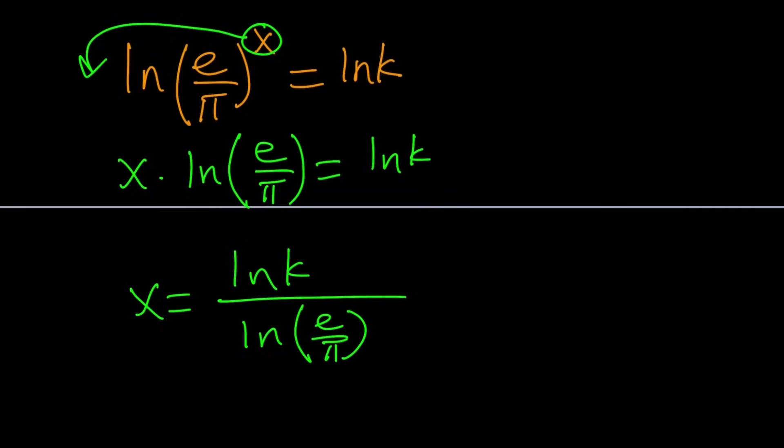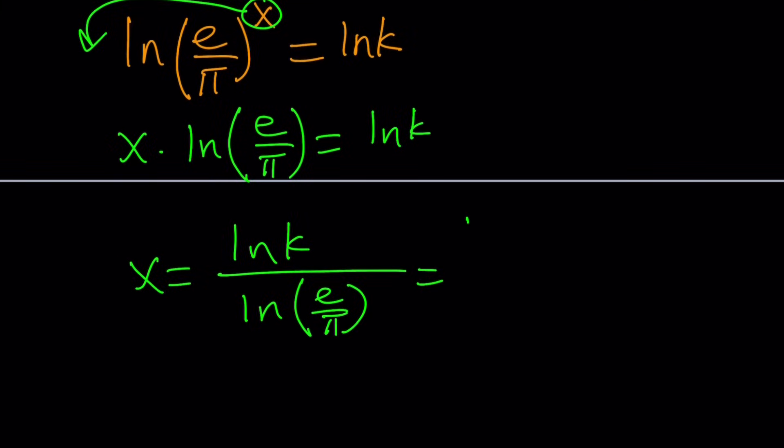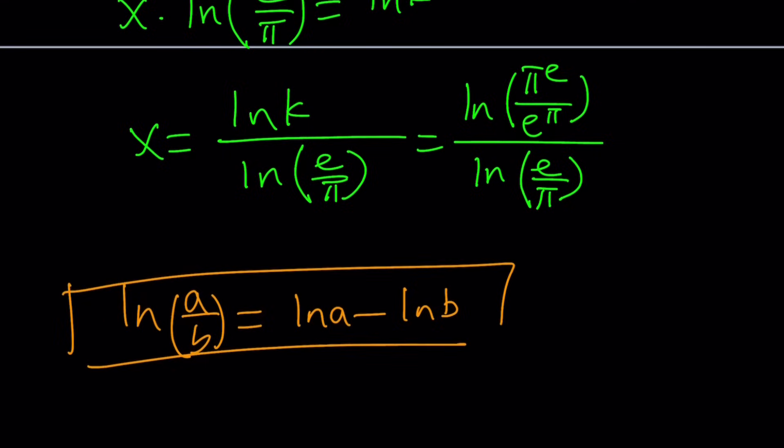Is that the end of it? Not yet, because e over pi can be simplified and we need to back substitute k. What is k? Pi to the power e divided by e to the pi. We kind of got the solution in terms of these constants, but let's simplify this a little bit. We have ln of a quotient. If you have ln of a quotient like a over b, that can be written as ln a minus ln b. Let's go ahead and use that property.